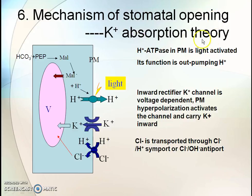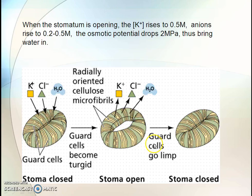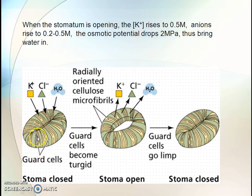Mechanism of stomatal opening — K-pump or proton pump theory: The hydrogen-ATPase in the plasma membrane is light-activated, and its function is to pump hydrogen ions out. The K-plus channel is voltage-dependent in the plasma membrane. Hyperpolarization activates the channel and carries potassium inwards. When stomata are opening, K-plus rises to 0.5 molar and anions rise to 0.2 to 0.5 molar. The osmotic potential drops, thus bringing water in. This is the stomatal closed state and this is the stomatal open state.